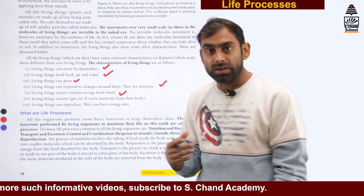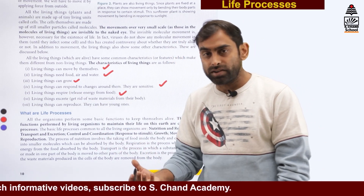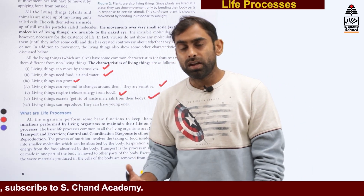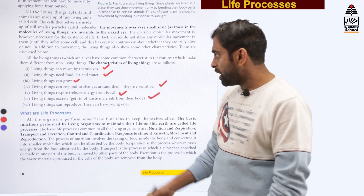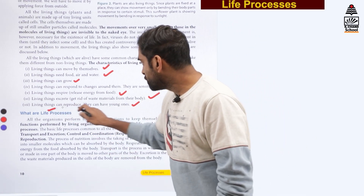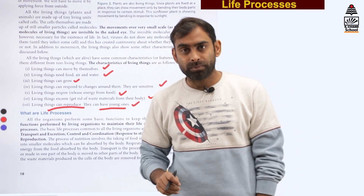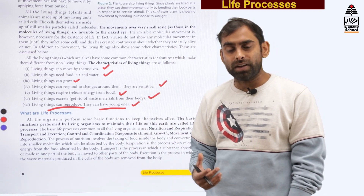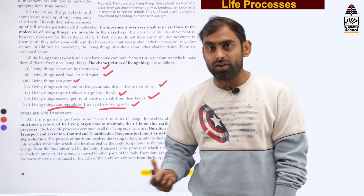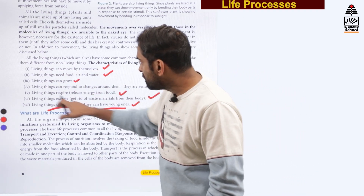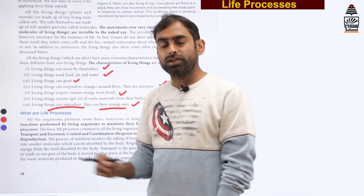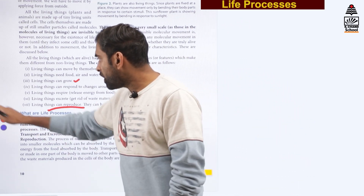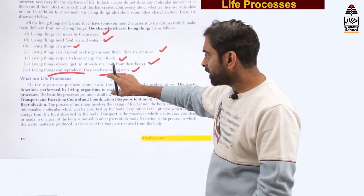Living organisms respire, meaning they take food and derive energy from it. Living things excrete waste things — whether it is plant or animal. And living things can reproduce; they can produce their young ones. In case of plants, it will most often be fruits and seeds, but in case of animals it will be either eggs or young ones. Whatever characteristics of living beings we are seeing here, most of them will be discussed as a part of life processes.